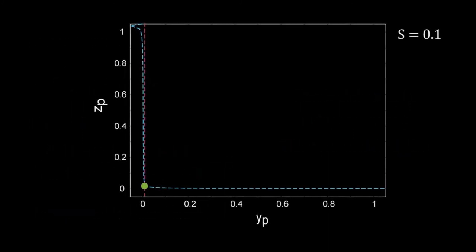Here are the null lines of zp and yp when S is very low, 0.1. The blue one is for zp and the pink one is the null line for yp. The green dot is the steady state.